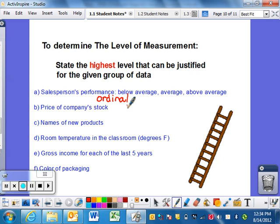Price of a company's stock is ratio because you can have a stock worth zero dollars. Names of new products is nominal because we're listing names. Room temperature in a classroom in degrees Fahrenheit - anything involving temperature is interval.